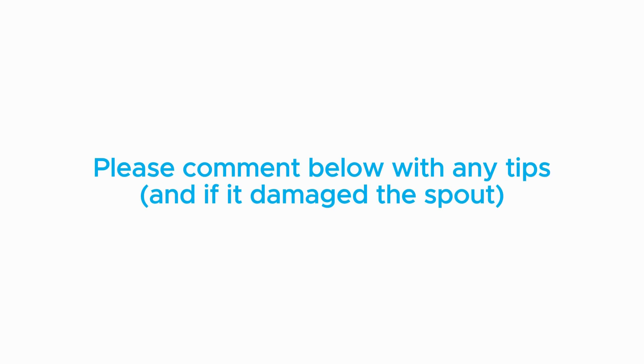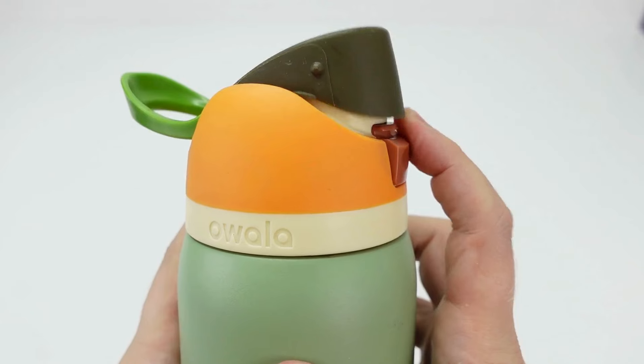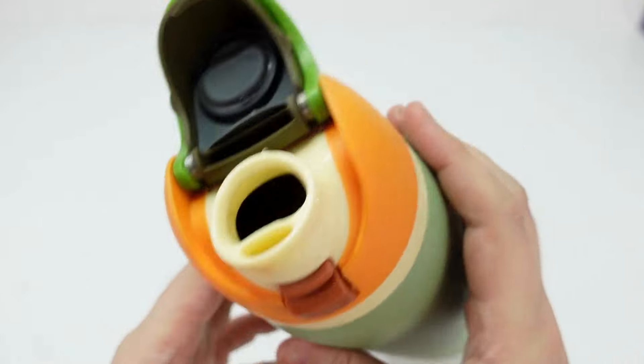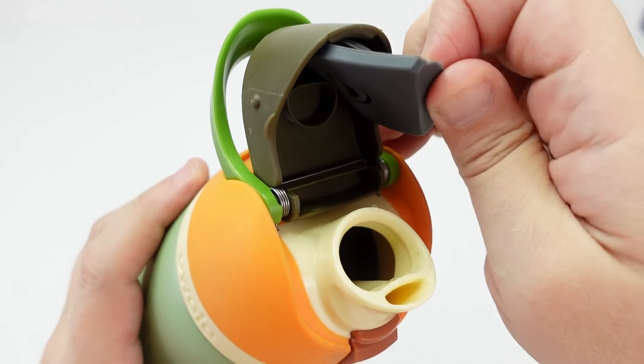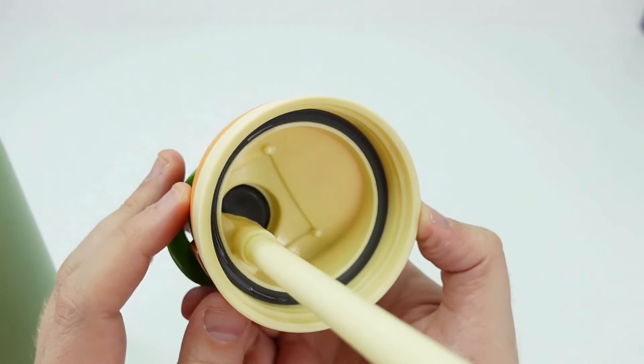And if you were able to detach the spout, please let me know in the comments because I'd be curious to learn how and if it created damage for you. But either way, this is a big reason why I've started recommending Owala if a clean bottle is important to you and you want a straw lid because it doesn't have a pivoting spout, so it's easier to clean everywhere that water touches the lid.